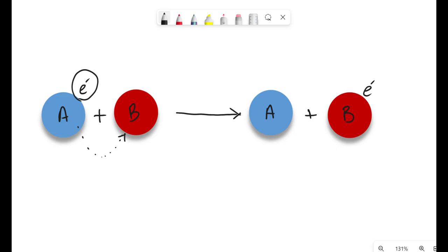So there was a loss of electron. A lost the electron. That's a loss. However, in the other case, B gained the electron. So there's a gain of electron here.